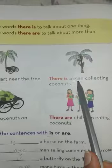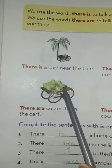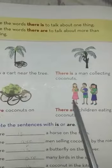'There are coconuts on the cart.' Coconuts — more than one coconut here, so we use 'there are.' 'There are children eating coconuts.' There are more than one child, so we use 'there are.'